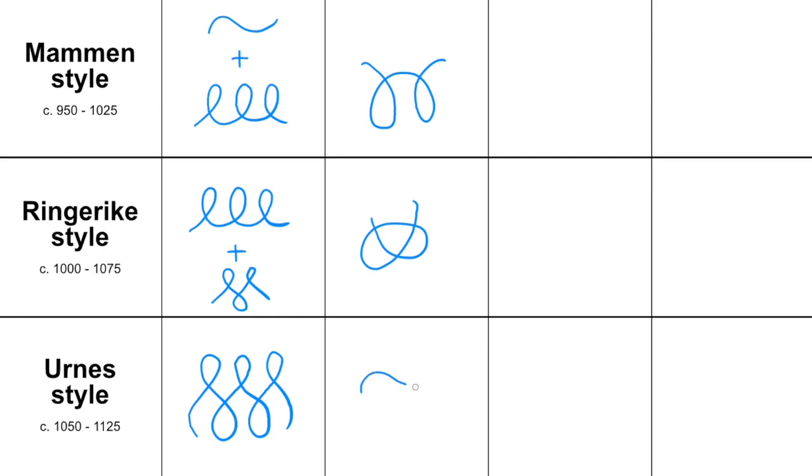In the Urnes style we also see a series of loops. Though here we have figure of 8 loops instead of curly loops, and the ends of the ribbons are curling inwards towards the neighboring loops.